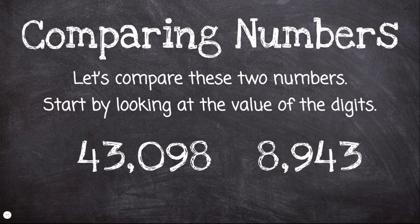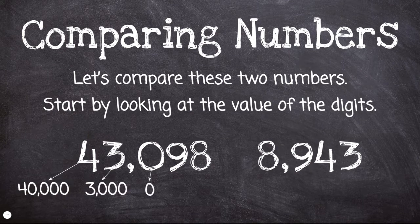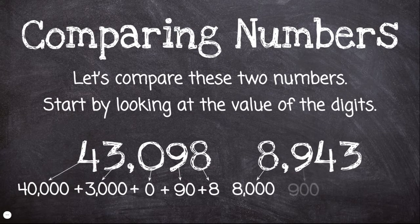Let's compare these two numbers. Start by looking at the value of the digits. In the first number, the 4 is worth 40,000 because it's in the ten thousands place. The 3 is worth 3,000. We have a zero in the hundreds place. The 9 has a value of 90, and the 8 has a value of 8. In the second number, the 8 is worth 8,000 because it's in the thousands place. The 9 is worth 900, the 4 is worth 40, and the 3 is worth 3.